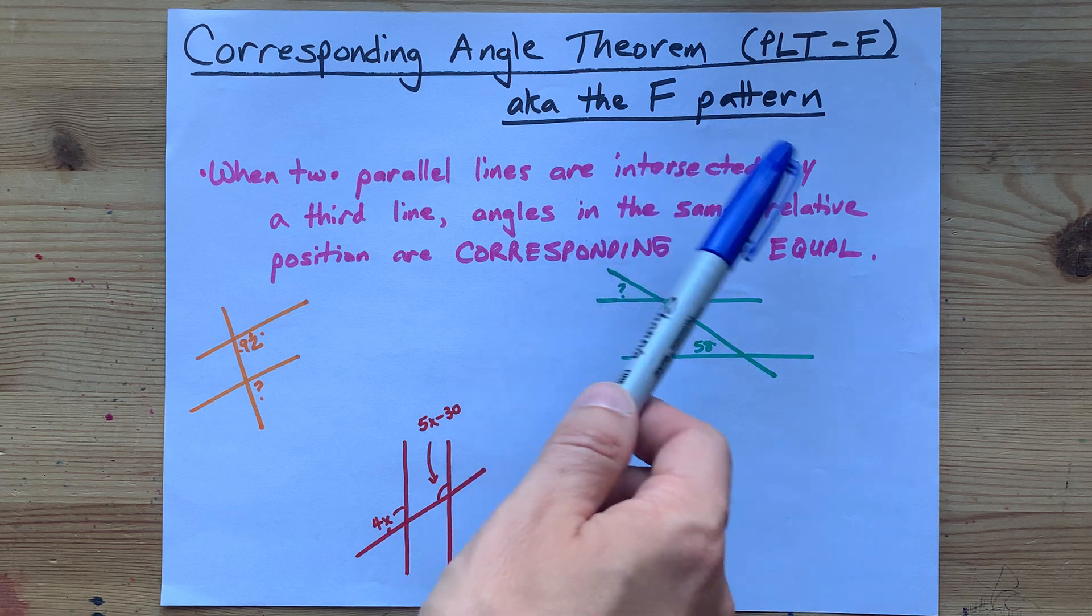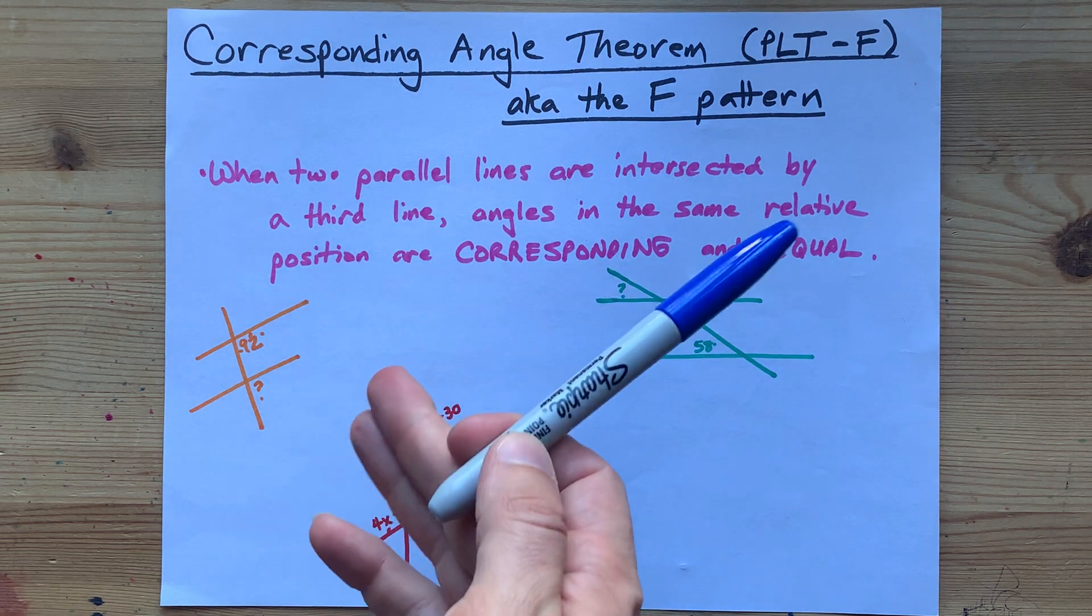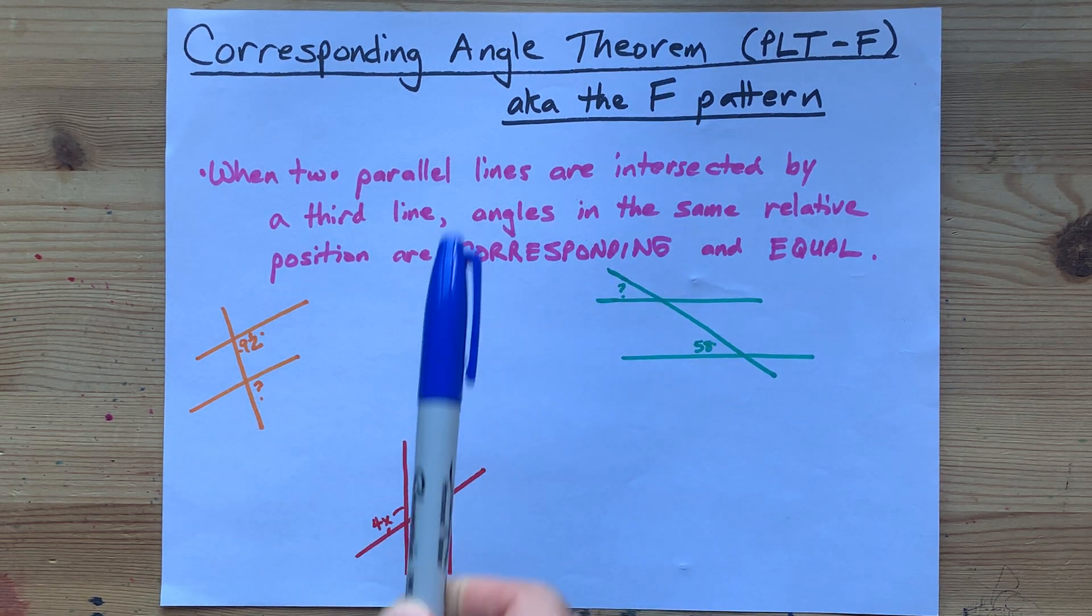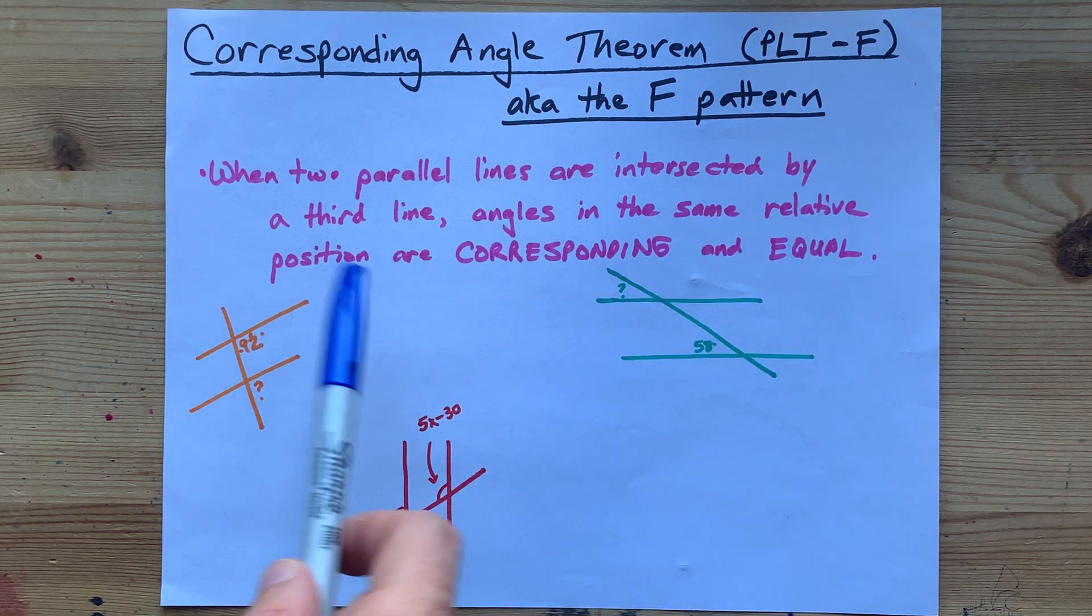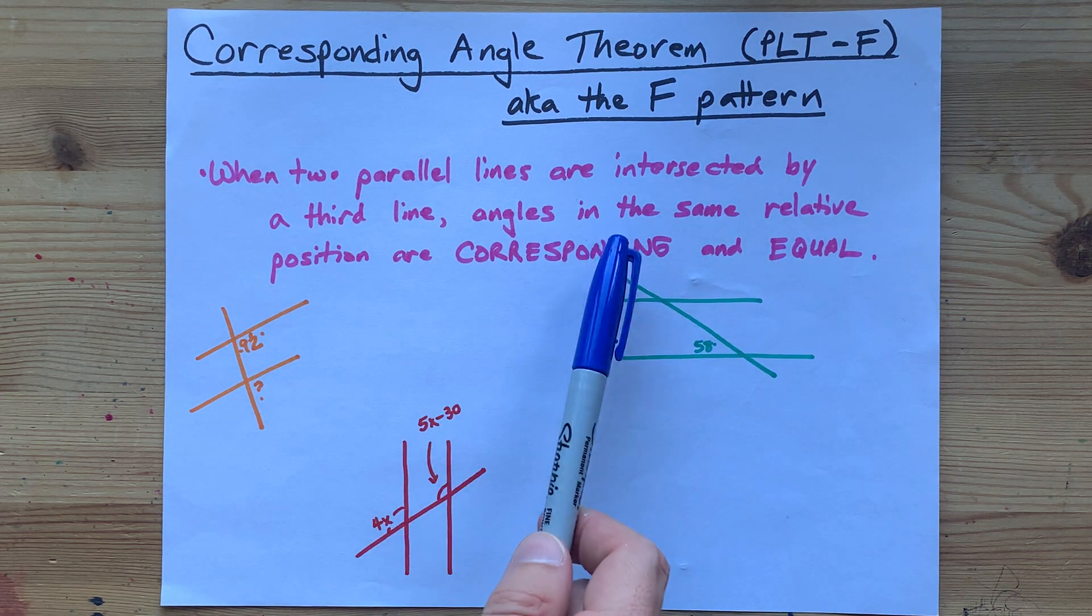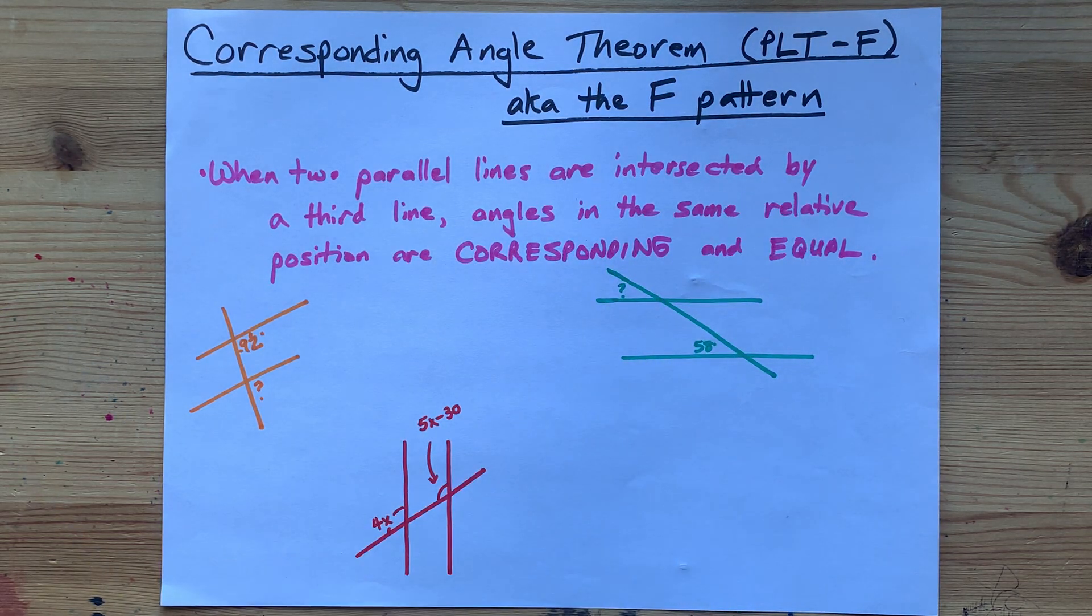When two parallel lines are intersected by a third line, often called a transversal, the angles that are in the same relative position are called corresponding and they are equal in size.